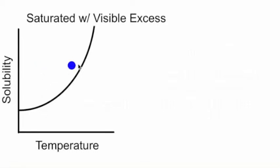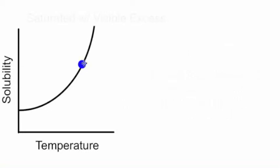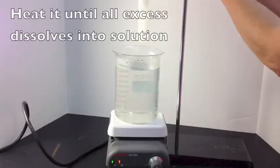But if we heat it, that excess is going to dissolve. So it's no longer saturated with excess, it's just saturated. And if we keep heating it, then we end up under the curve, producing an unsaturated solution. There's actually room for more solute if we want.